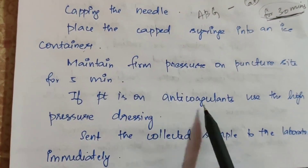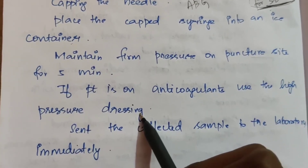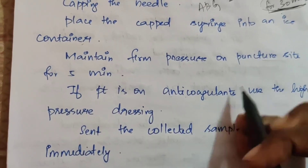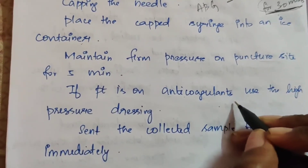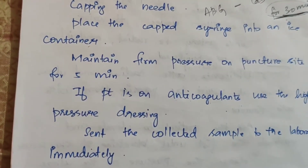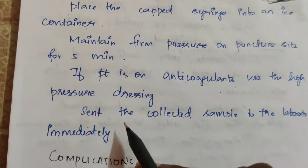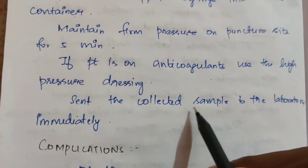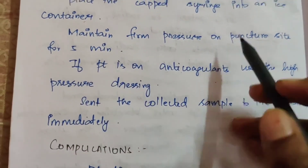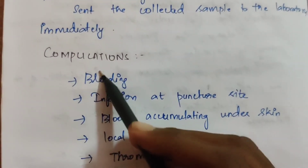If the patient is on anticoagulant — for example heparin or clexane — use high pressure dressing. Send the collected sample to the laboratory immediately. If not, place it in an ice container before sending to the lab.